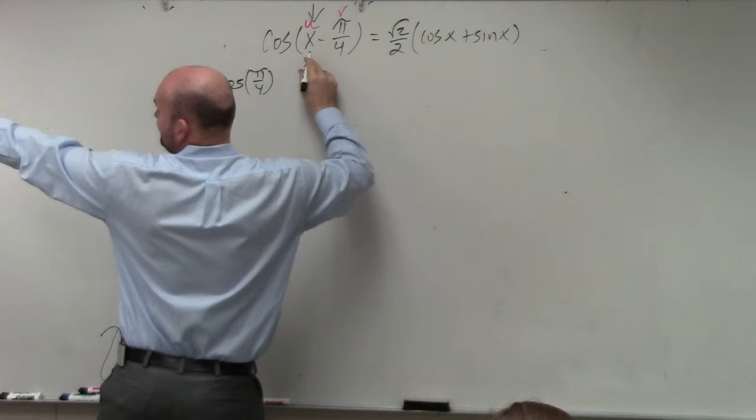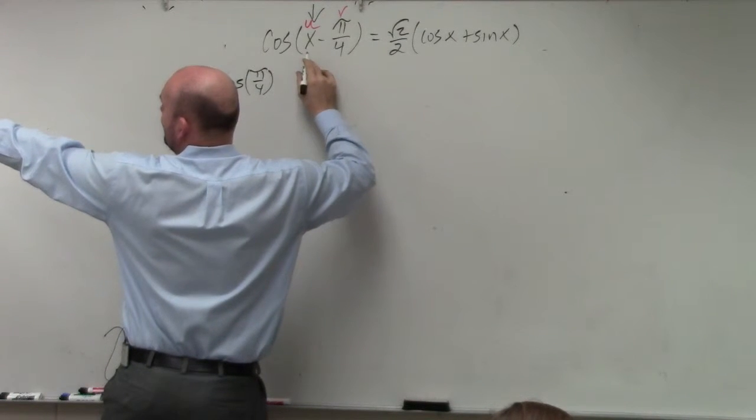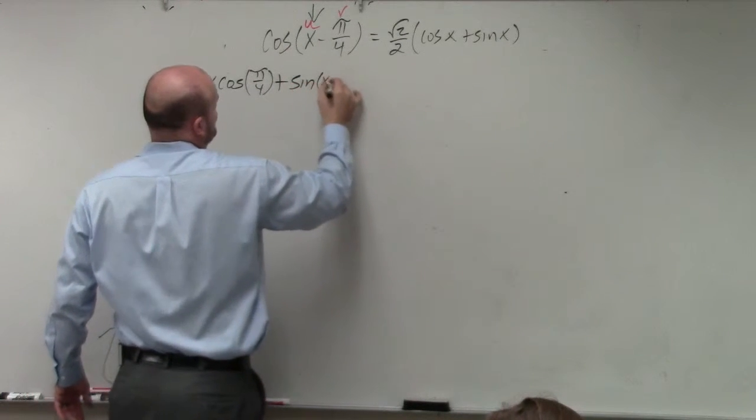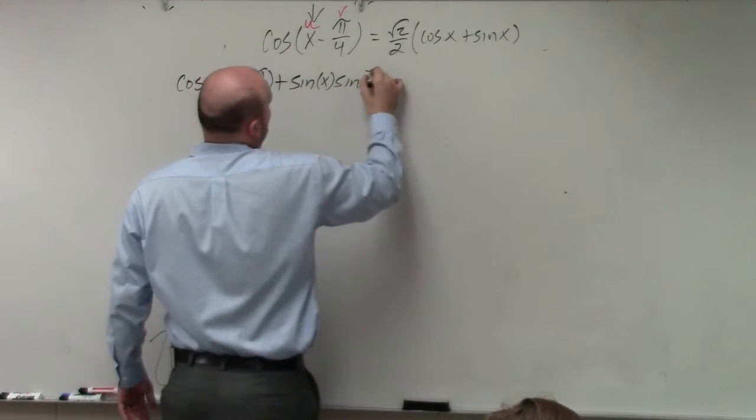Since based on my formula, if it's a difference of two angles, it's going to be the sum of them in here. So that's plus the sine of x times the sine of pi over 4.